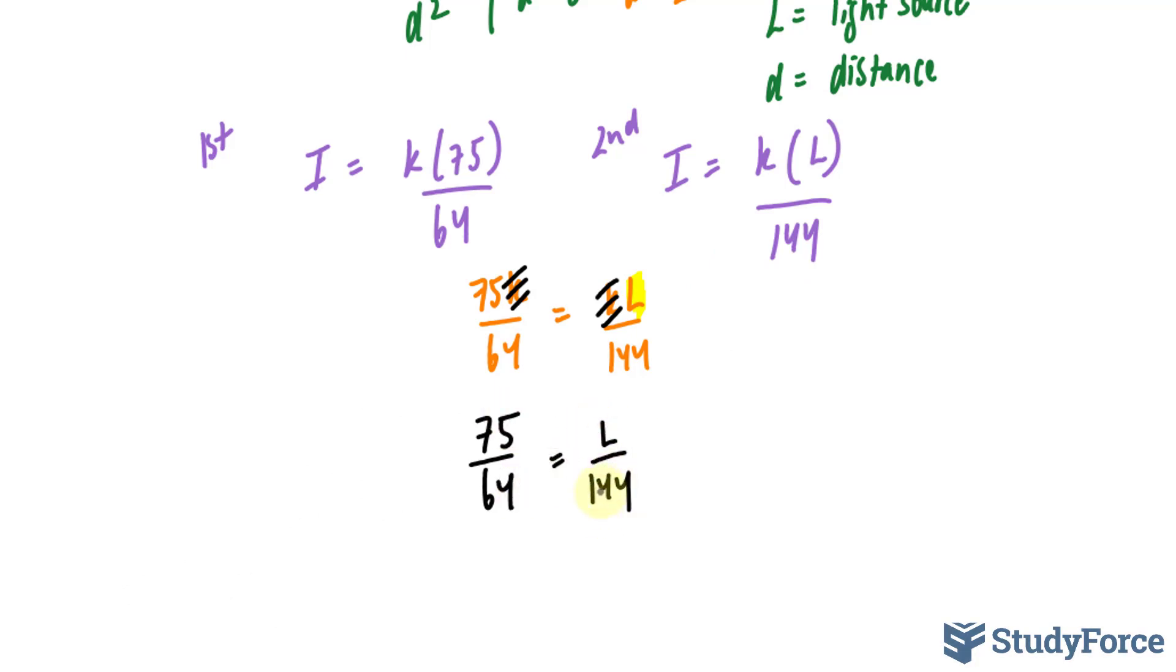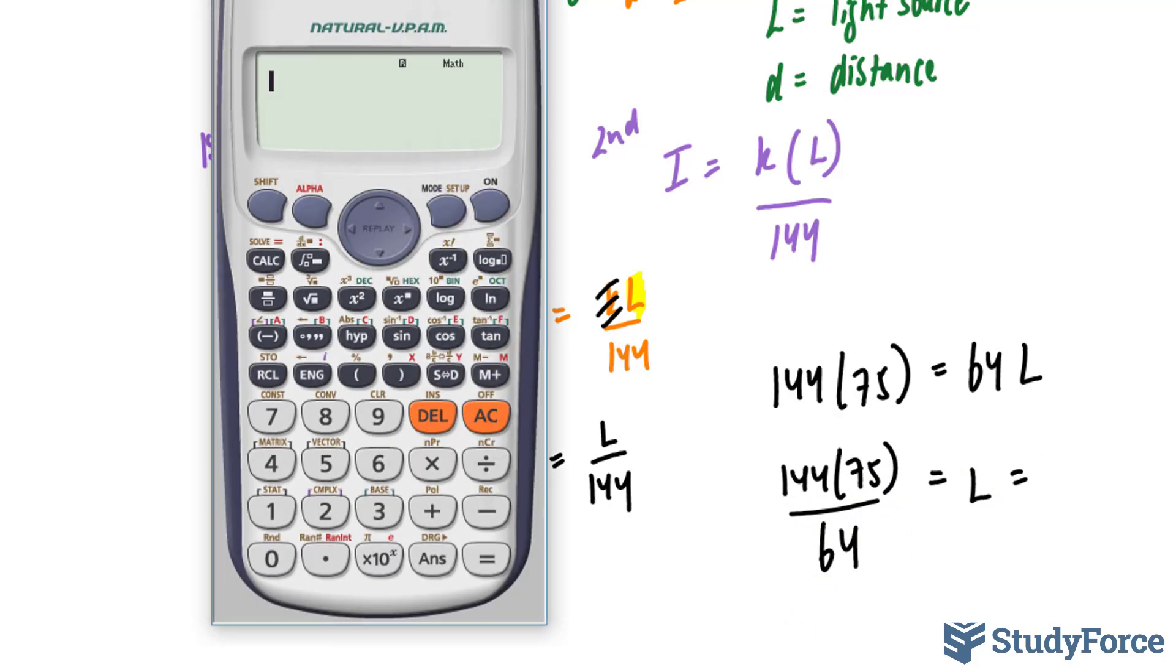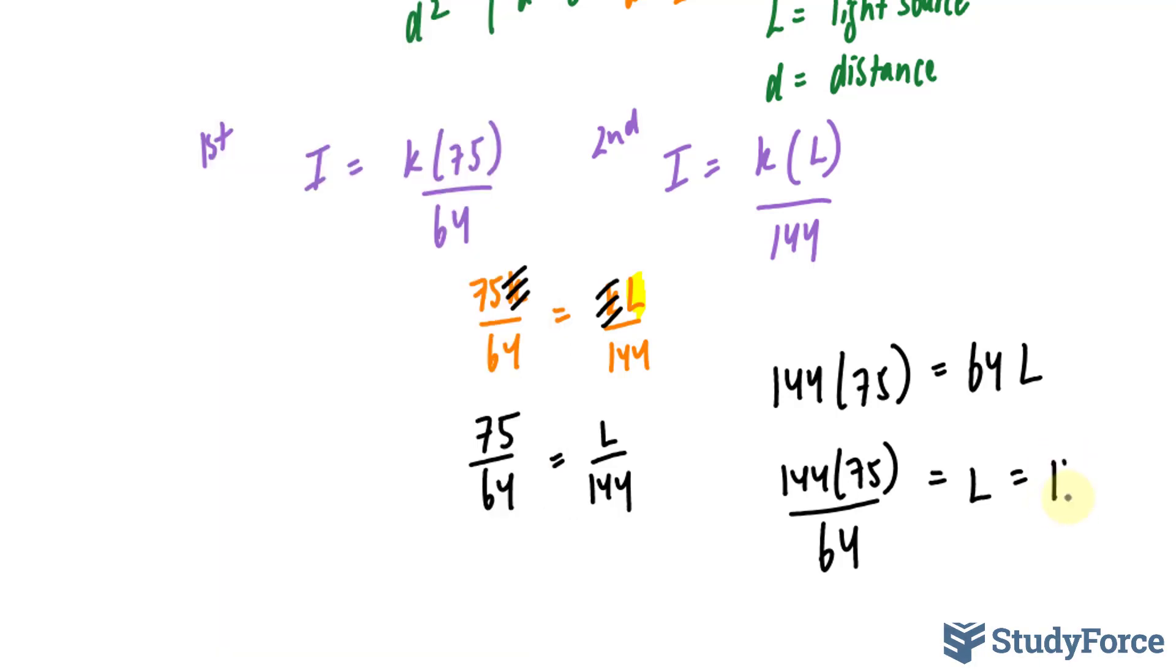This is a simple cross multiplication problem now. We cross multiply where I have 144 times 75. Now, finding the product of this and then dividing by 64 gives us the light source strength: 144 times 75 divided by 64 gives us 168.75.